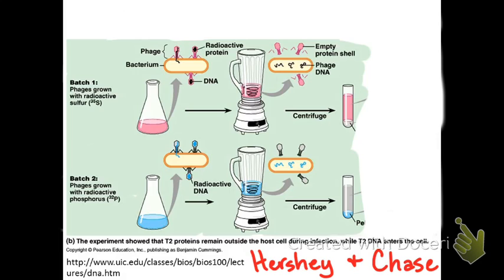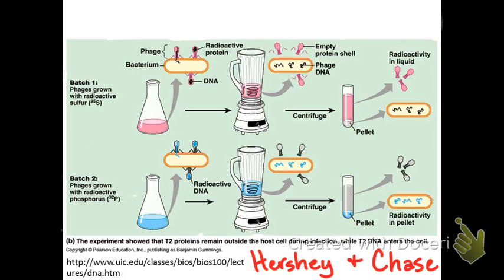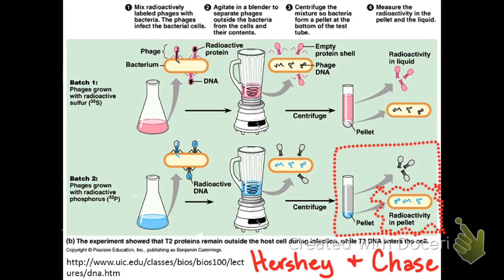And so the pellet would include whatever had entered the cells. And sure enough, in the radioactive sulfur group, it was the liquid that was radioactive. But in the radioactive phosphorus group, it was the pellet that was radioactive. So radioactive DNA from the phage had entered the cells.